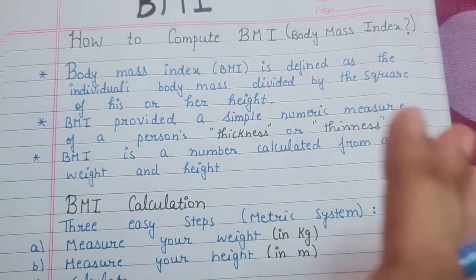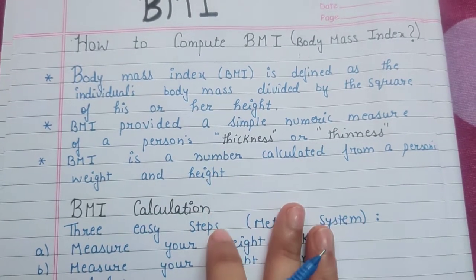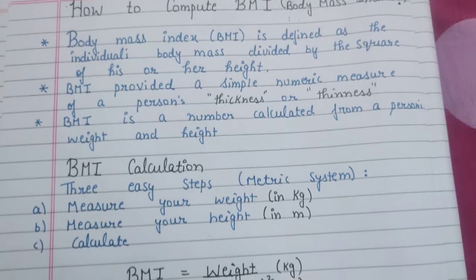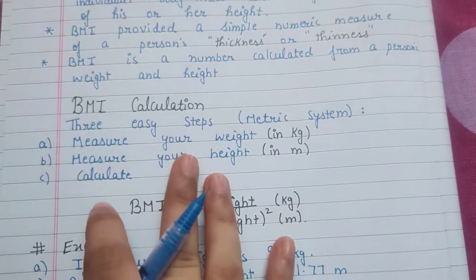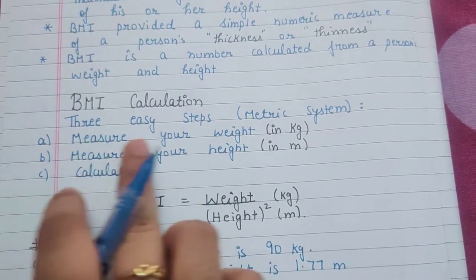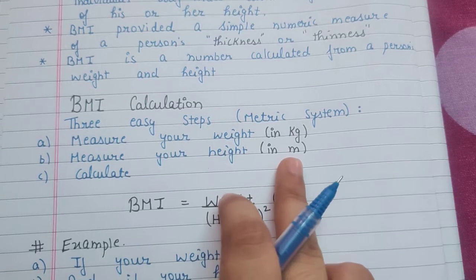This is called Body Mass Index. Now let's see how to calculate it. There are three easy steps: first, measure your weight in kg; second, measure your height in meters; and then you have to calculate.